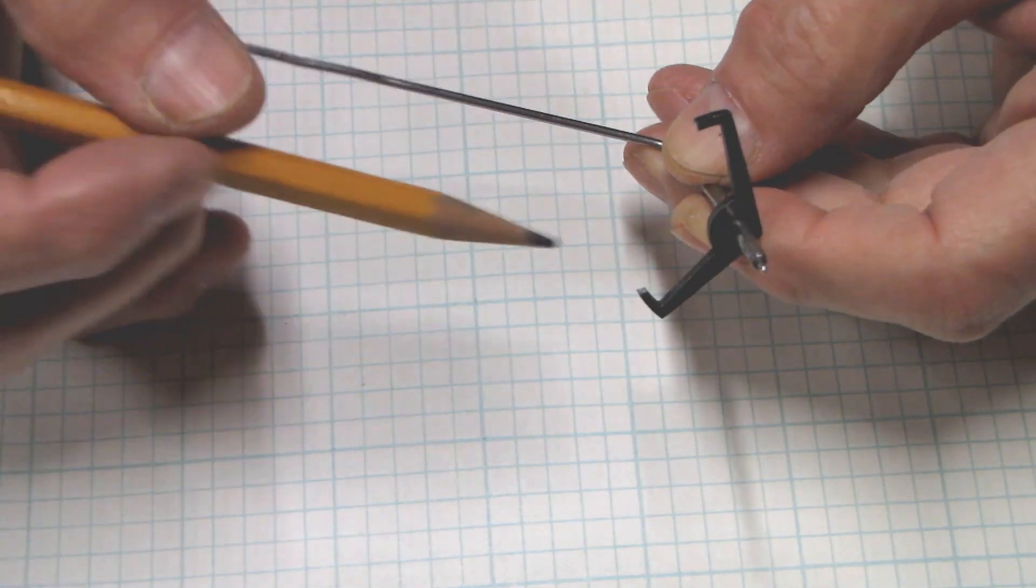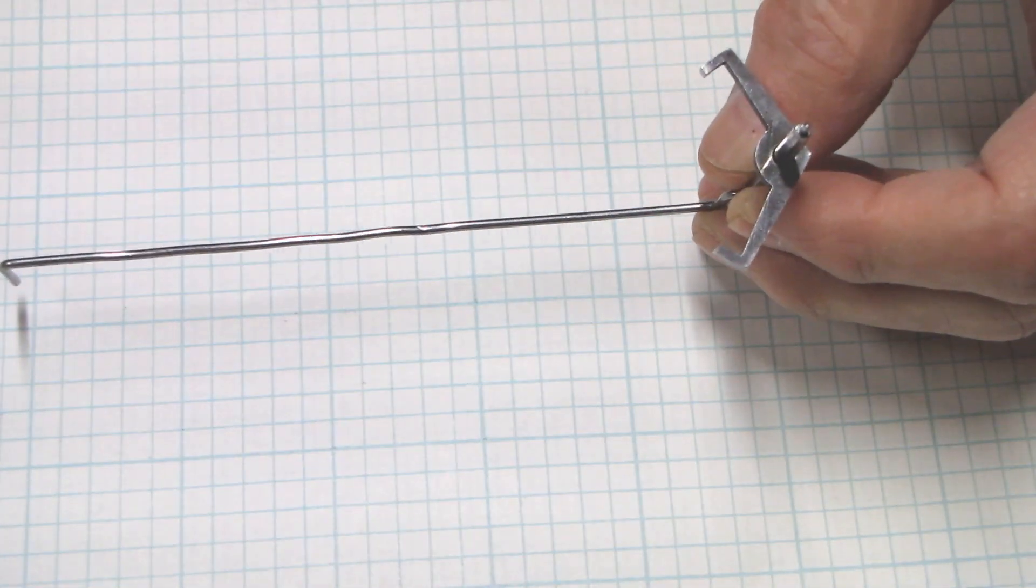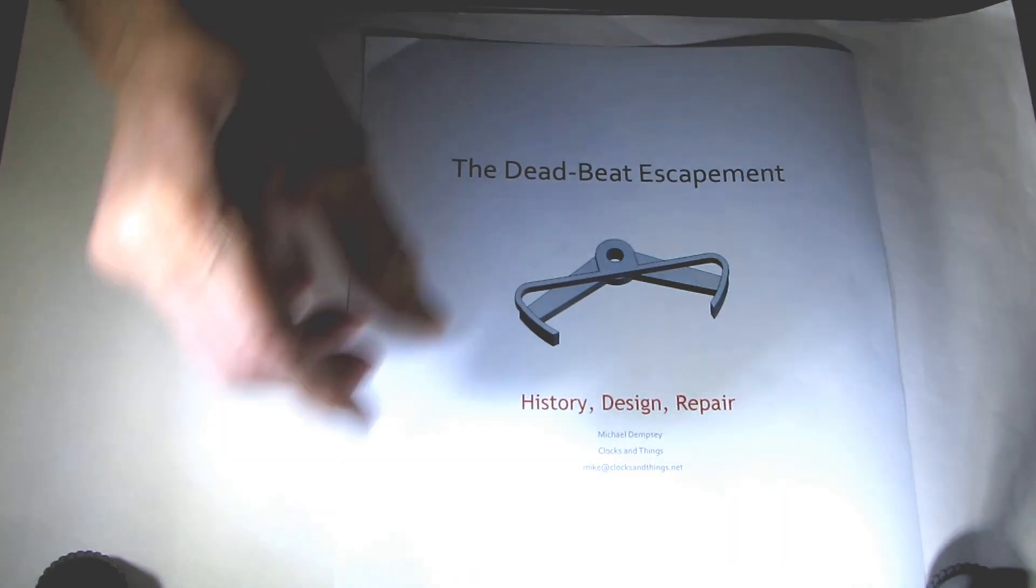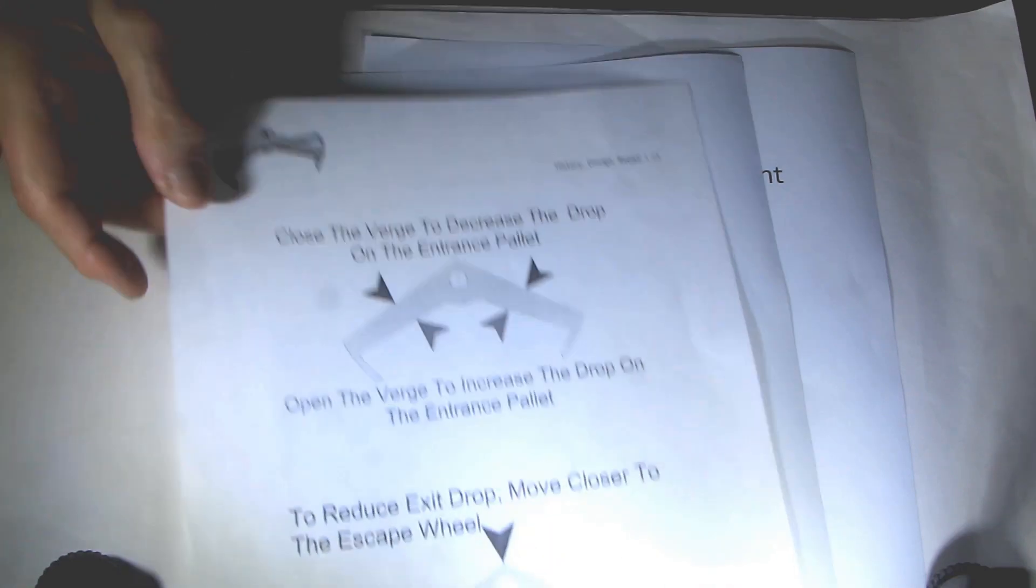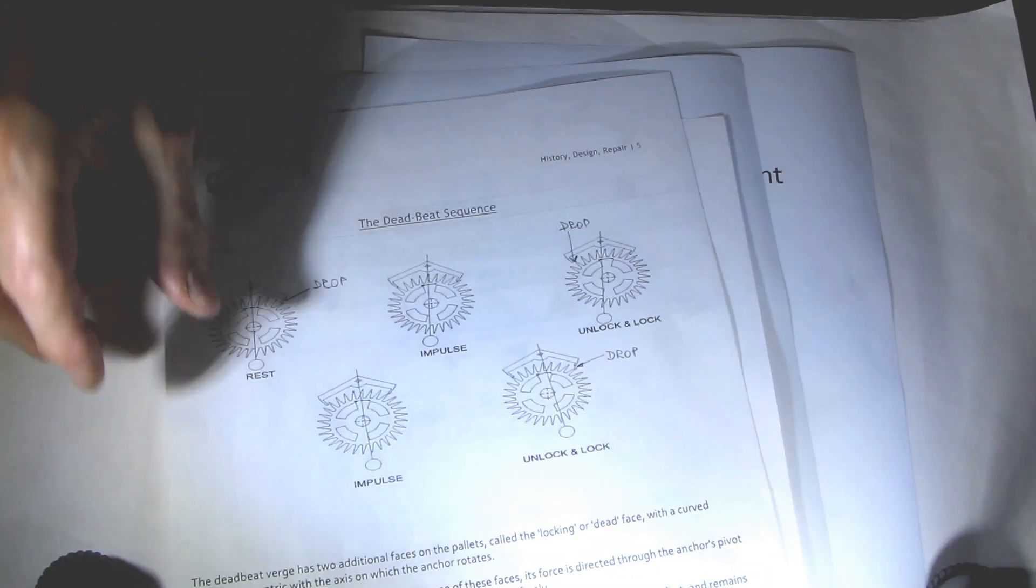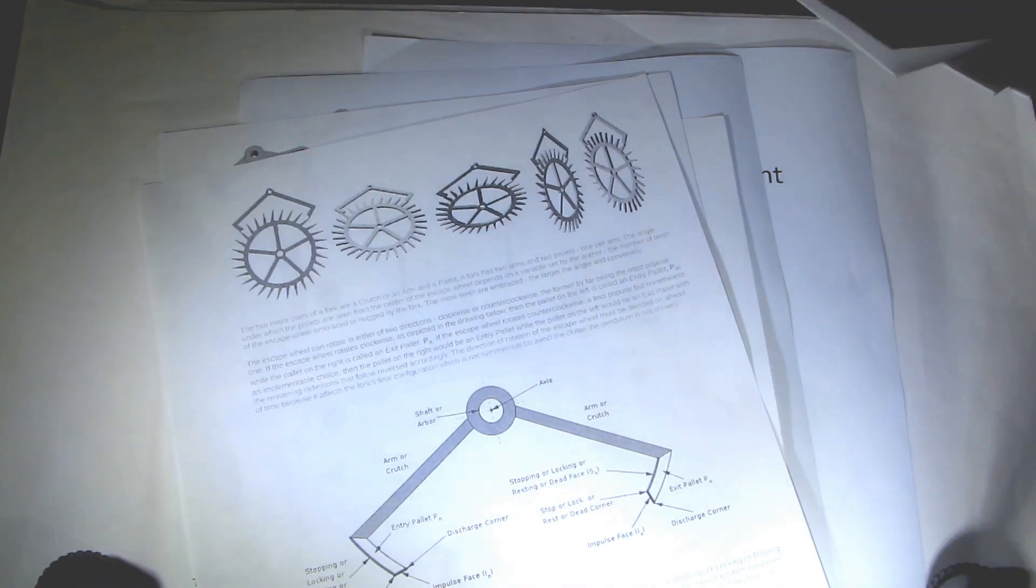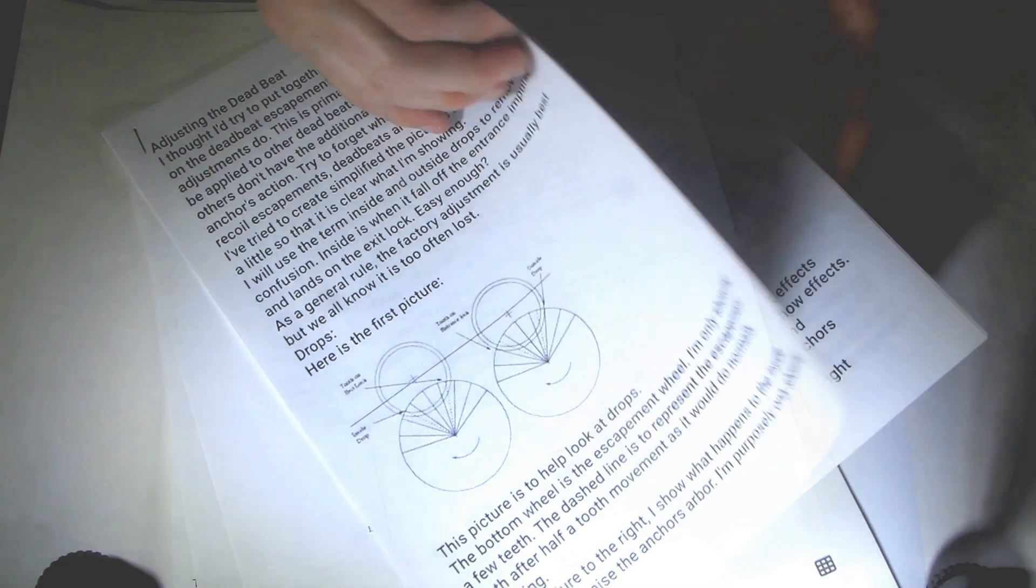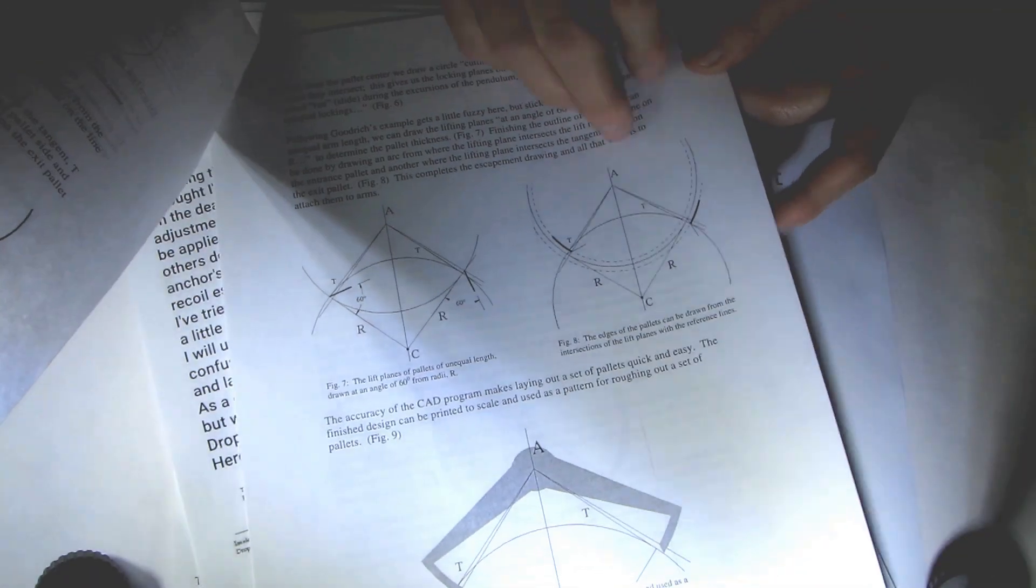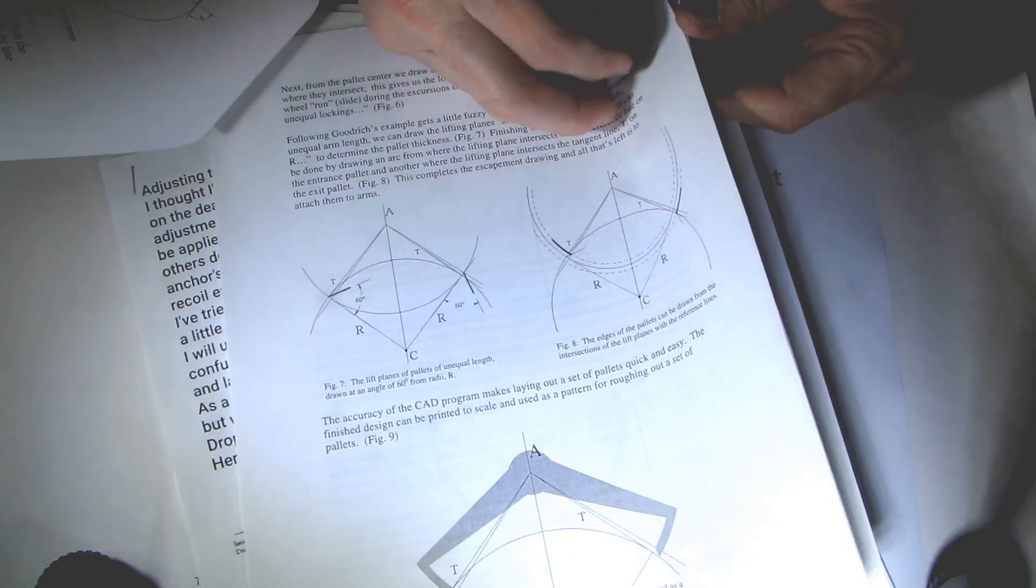But how can I correct these defects without having special tools? I started reading many articles, books, and forum conversations on the topic of the deadbeat escapement and how it is built. Very useful for my research were articles on the use of computer-aided design in clockmaking written by David Labonte, and the history, design, and repair of the deadbeat escapement written by Michael Dempsey.